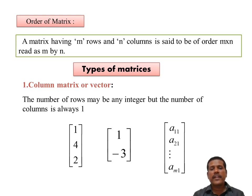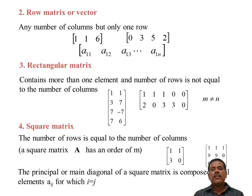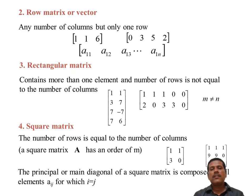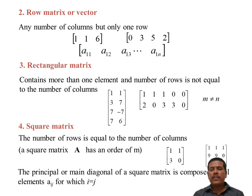Types of matrices: First, the column matrix — a matrix containing only one column is called a column matrix. Similarly, a row matrix has any number of columns but only one row. A rectangular matrix is defined as one where the number of rows is not equal to the number of columns. A square matrix is one where the number of rows is equal to the number of columns, with order 2 by 2 or 3 by 3, simply called order 2 or order 3.